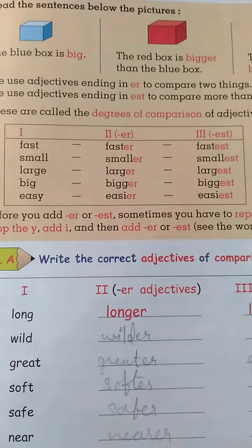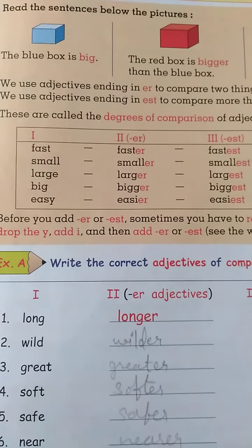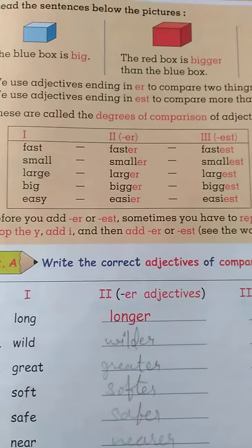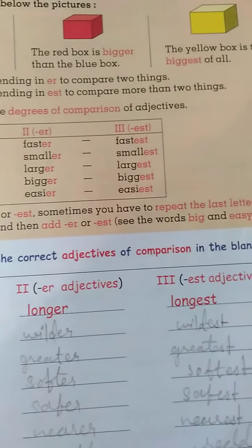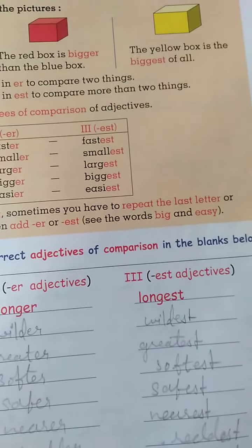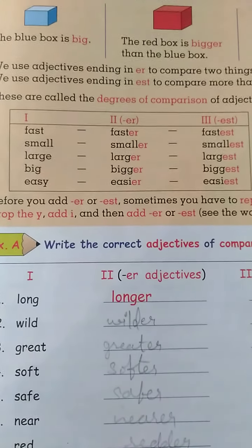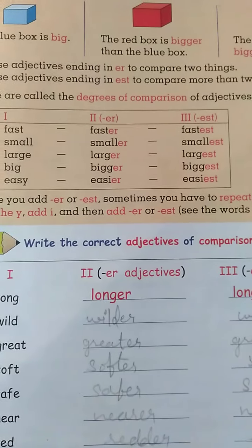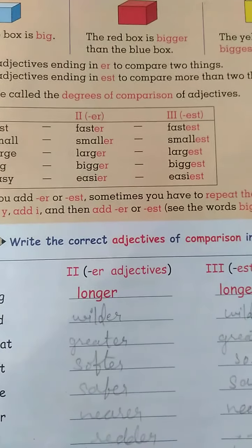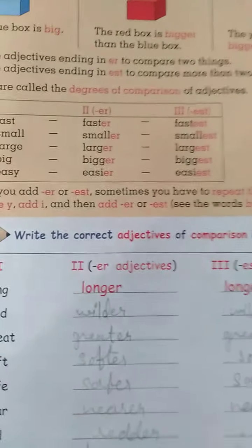Easy, easier, easiest. Before you add E-R or E-S-T, sometimes you have to repeat the last letter, or drop the Y, add I, and then add E-R or E-S-T. See the words big and easy.